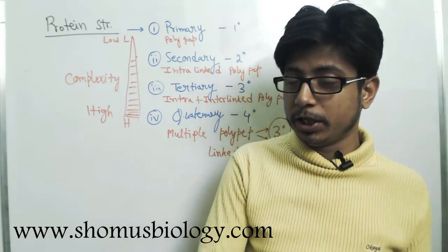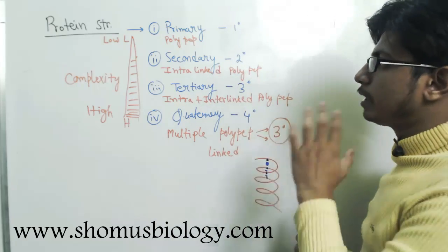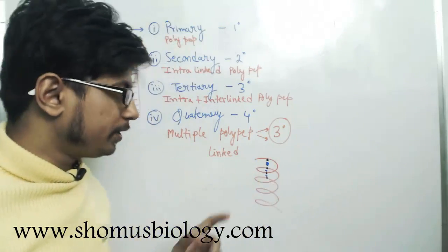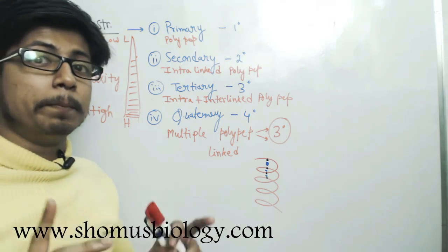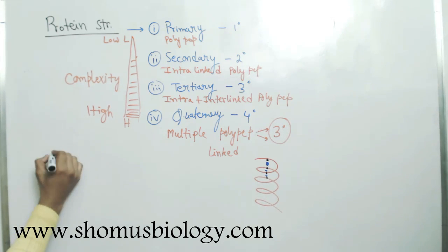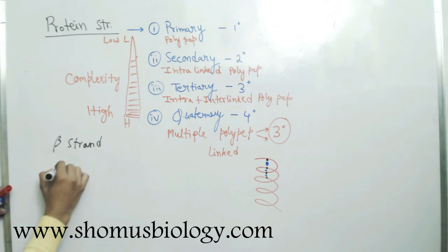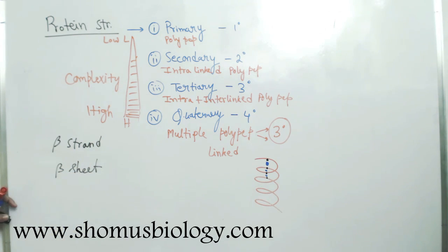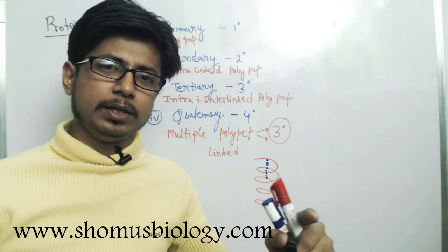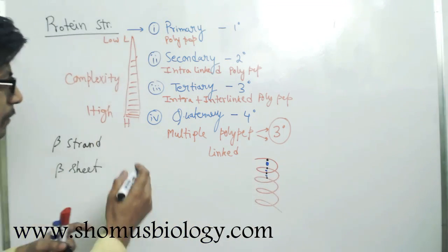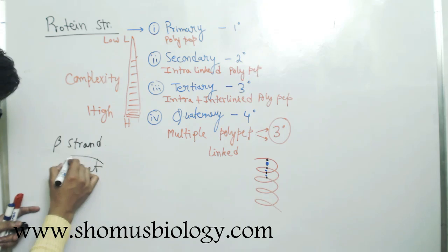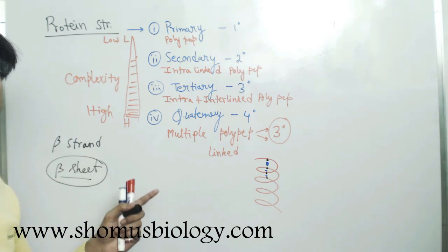In the last video I talked about alpha helix, but in this video about beta sheet, you need to understand the beta strand. The difference between the two: a beta strand is a stretch of amino acid sequences — similar to a primary structure — while a beta sheet is a secondary structure where multiple beta strands are linked to each other.